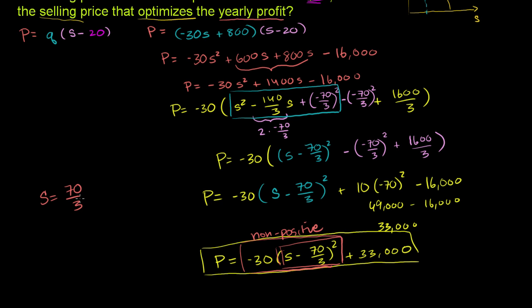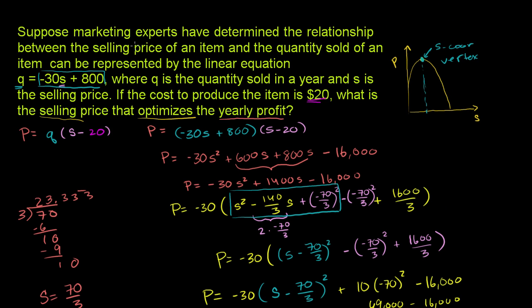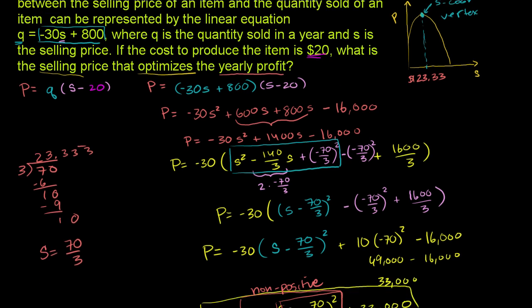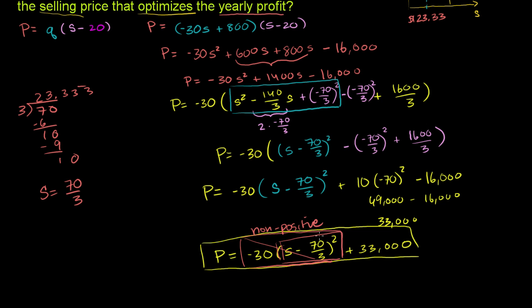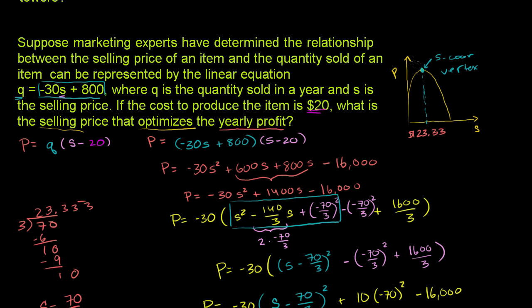When s = 70/3, that term equals 0. And 70 ÷ 3 = 23.333..., so the ideal selling price is approximately $23.33. That is the selling price that optimizes our profit. When you sell for $23.33, this term is 0 and your profit is $33,000 for the year.